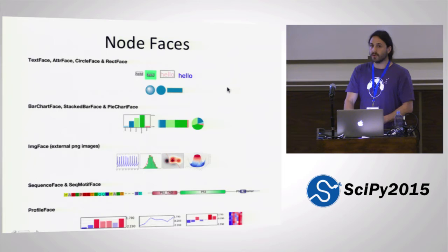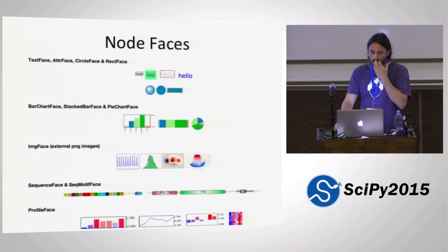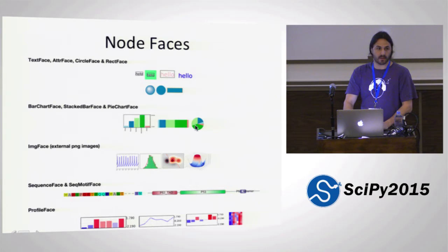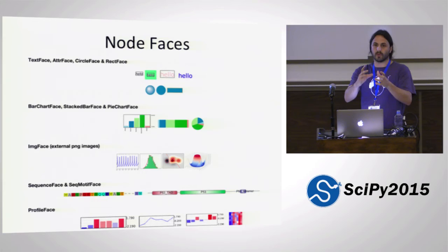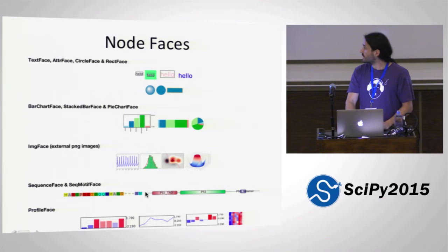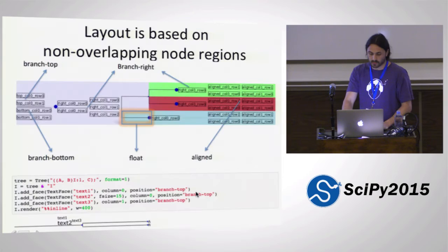The last component for customizing images is node faces. In ETE there are a number of built-in face objects you can use to add information to your trees — basically text-based faces, basic shapes, some charts that are natively rendered by ETE's drawing system. You can also attach external images — for example, if you are generating a matplotlib plot and want to attach it to specific nodes in the tree, you can do this with faces. There are also some specific faces for biological representation of sequences, motifs, domains, or whatever.